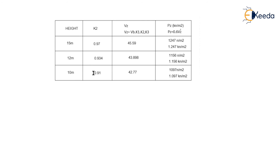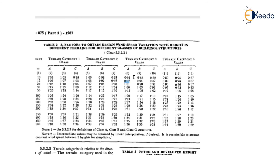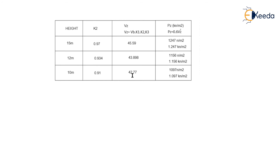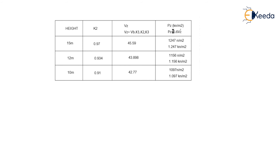For 10-meter height, K2 = 0.91. VZ = 47 × 1 × 0.91 × 1 = 42.77 m/s. PZ = 0.6 × (42.77)² = 1097 N/m² = 1.097 kN/m².